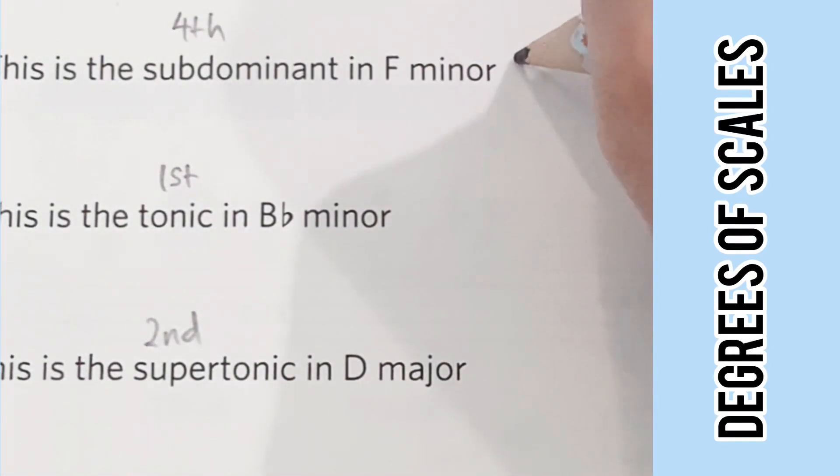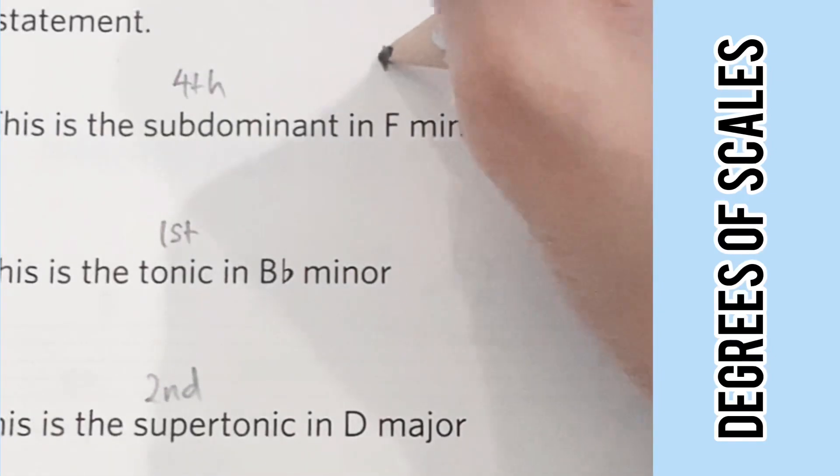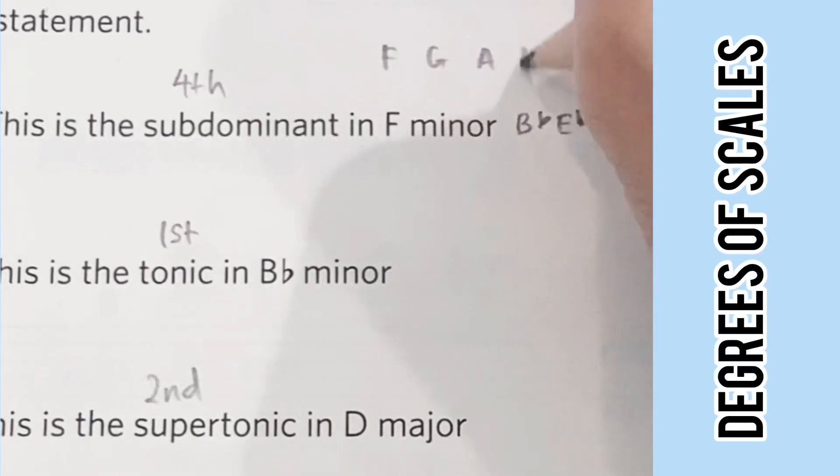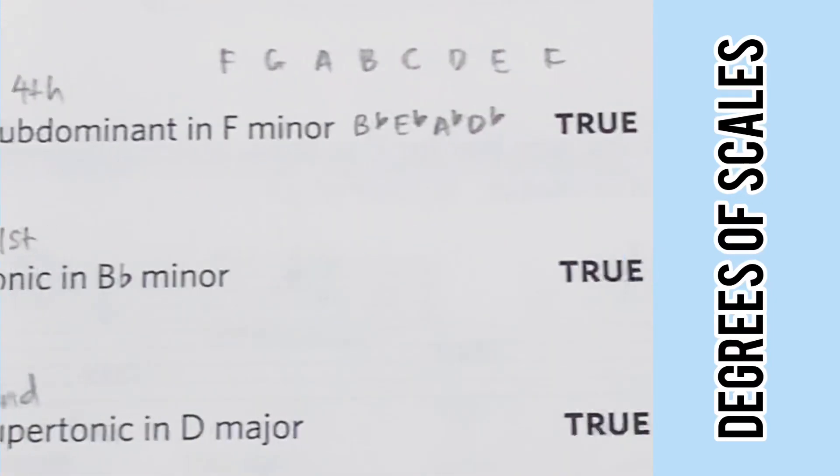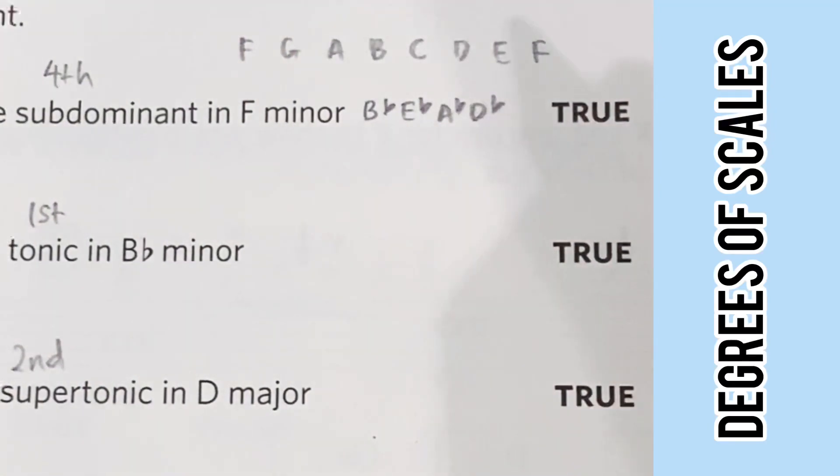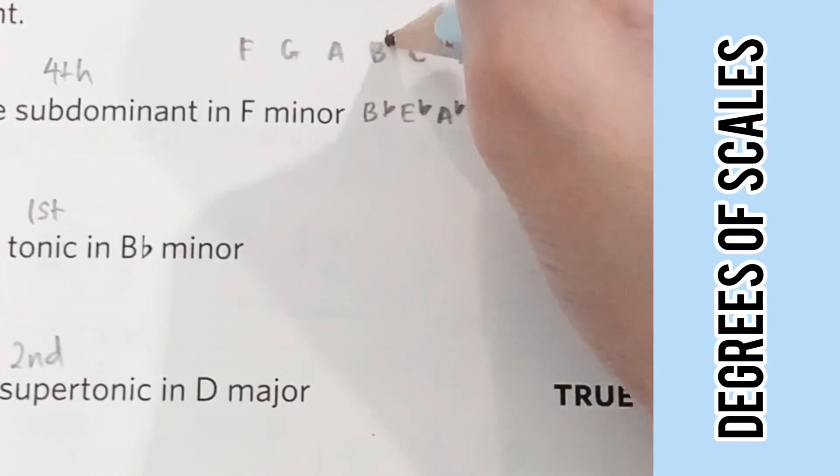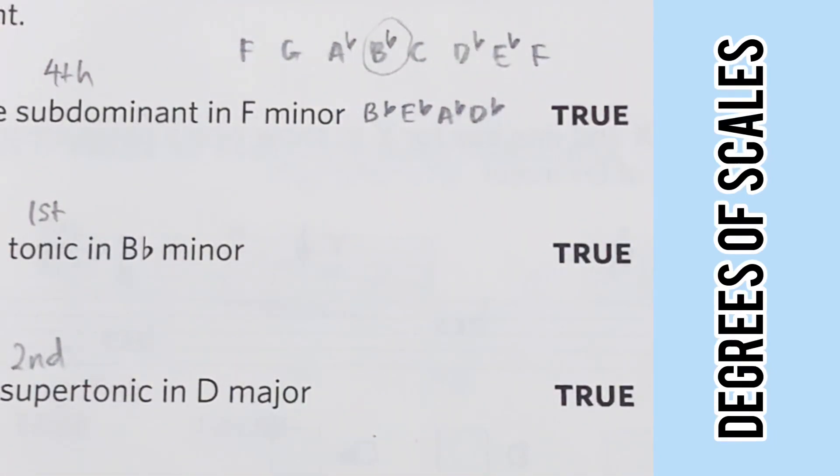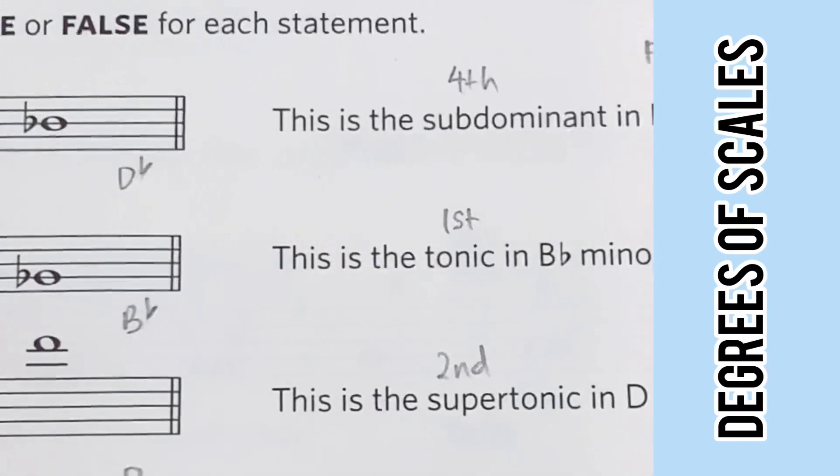Next we write down the key signature for each of the key. For F minor it's B, E, A, D flat, and the scale F, G, A, B, C, D, E, F. And the key signature we have B flat, E flat, A flat, and D flat. The fourth degree is B flat.